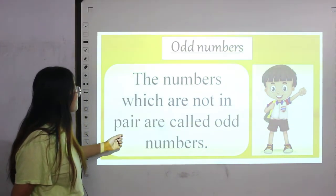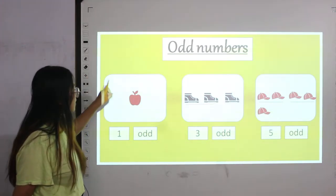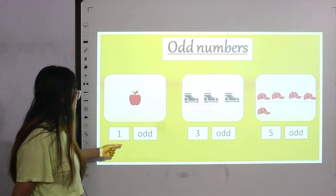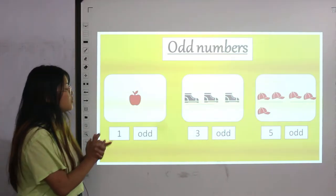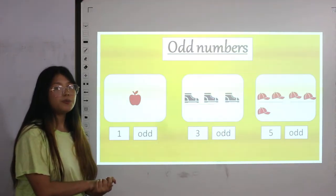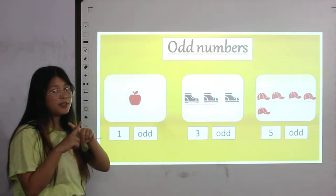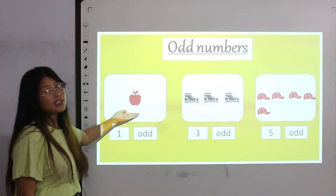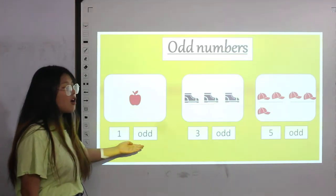Let me give you a quick example. Count with me — how many apples do we have over here? We have one apple. So to see if the number is odd or even, first we have to pair them up. If they are in pair, they are even. If they are not in pair, they are odd. As you can see, the apple over here doesn't have any pair, so one is an odd number.